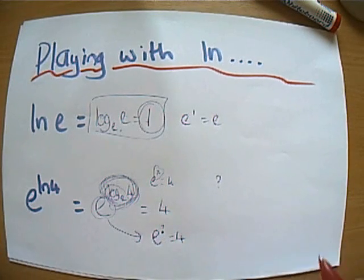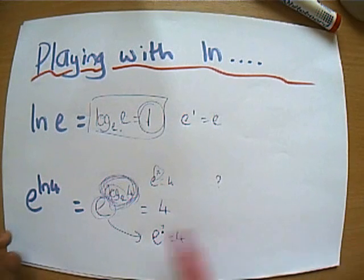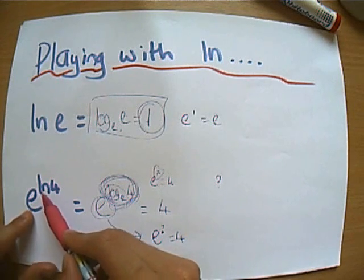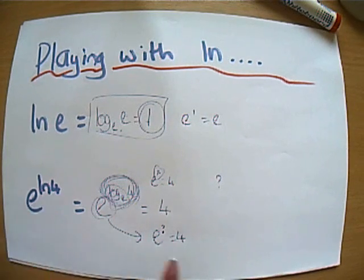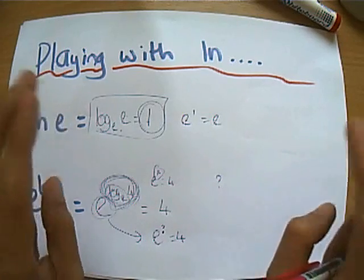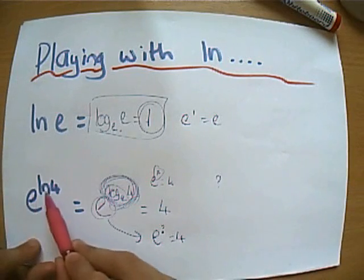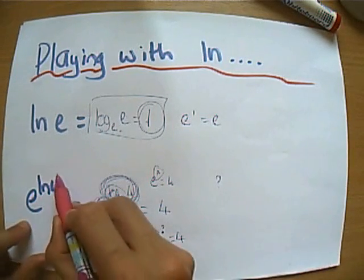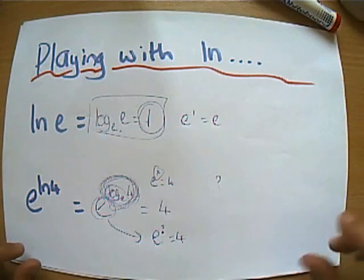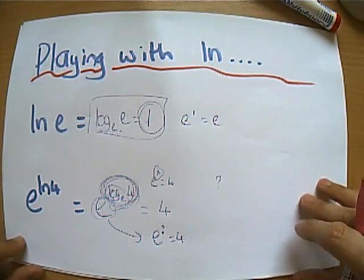And hang on a minute, we said that when you do e to the something, it gives you 4, and we're actually doing e to the something, so the answer to this must be 4. So that's actually where it comes from. If you like a little shorthand way of remembering it, if you see e to the power of ln of something, the e and the ln kind of cancel each other out. I'm making inverted commas with my fingers here.